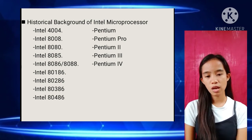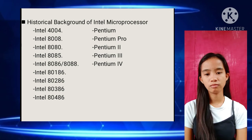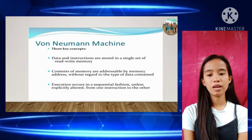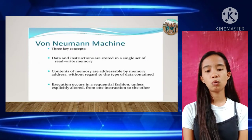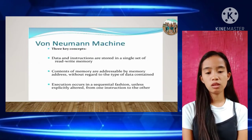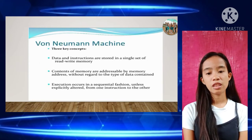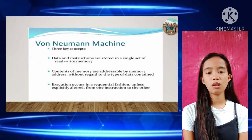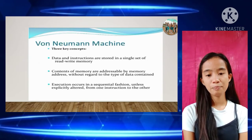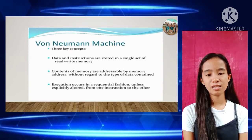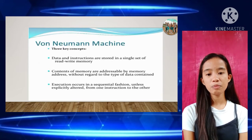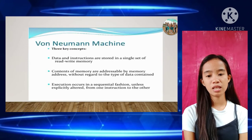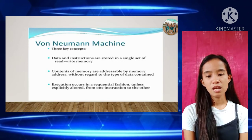The historical background covers when Intel microprocessors were made or introduced, including differences in memory range and capabilities. The Von Neumann machine is an early computer created by Hungarian mathematician John Von Neumann (1903–1957). It includes three components used by most computers today: a CPU, a slow-access storage area like a hard drive, and fast-access secondary memory (RAM).